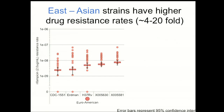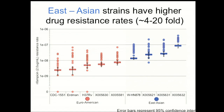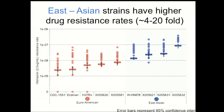When we did that for our Euro-American isolates, we find minimal variation between strains. However, adding in the East Asian family of isolates reveals a statistically significant increase in drug resistance rate — specifically about a 4 to 20-fold increase in rate — supporting the idea that there may be biologic differences between these strains that allow them to more quickly acquire drug resistance.